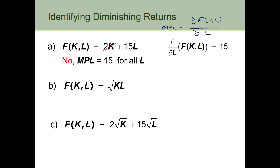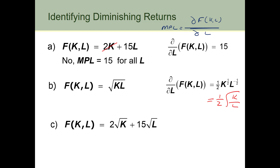In the next case we have the production function equal to the square root of k times L — remember that's a Cobb-Douglas production function. We differentiate again with respect to L holding k constant, and that equals one half times the square root of k over L. If we hold k constant and increase L, because L is in the denominator, the marginal product of labour will decrease as L gets bigger. We have diminishing returns in this case.